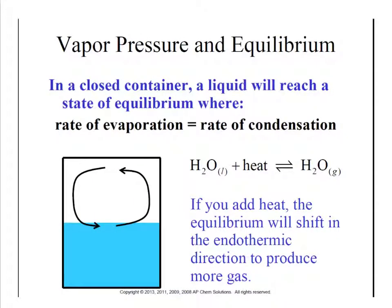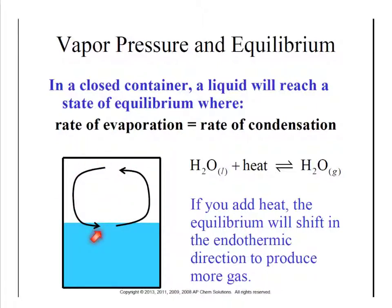In an open container, something evaporates, turns into a gas, and just floats away — so eventually it disappears. However, if you close a container, it will enter a vapor pressure equilibrium. Part of the liquid just naturally sitting there is going to evaporate and turn into a gas inside the bottle — even water does this. Water evaporates and floats around in there. But once the pressure builds up enough, it falls back down into liquid, and we enter a state of equilibrium where evaporation and condensation occur at the exact same rate.